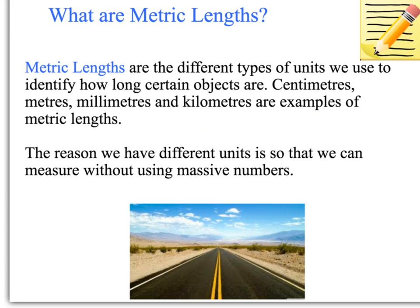The reason we have these is so that we can measure different things using different lengths, depending on what we need to measure. For example, you're not going to use millimetres to measure the length of a road — that's going to be a massive number. So that's why we use kilometres to measure roads, and millimetres just to measure very small objects. Today we're going to be looking at converting these lengths into different units — for example, from centimetres to kilometres, or from metres to millimetres.